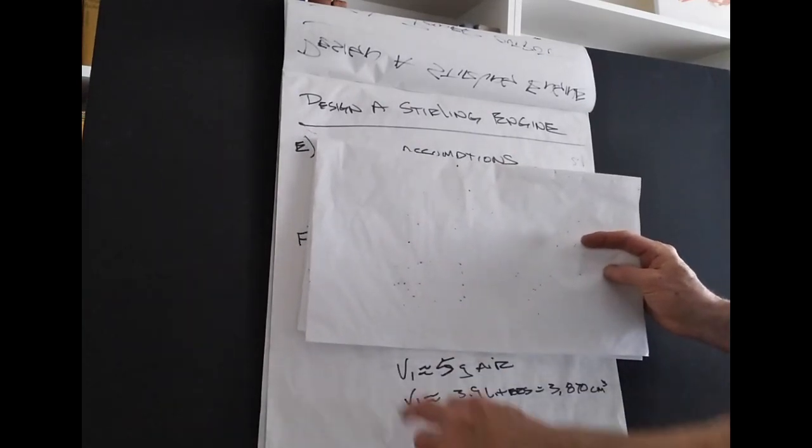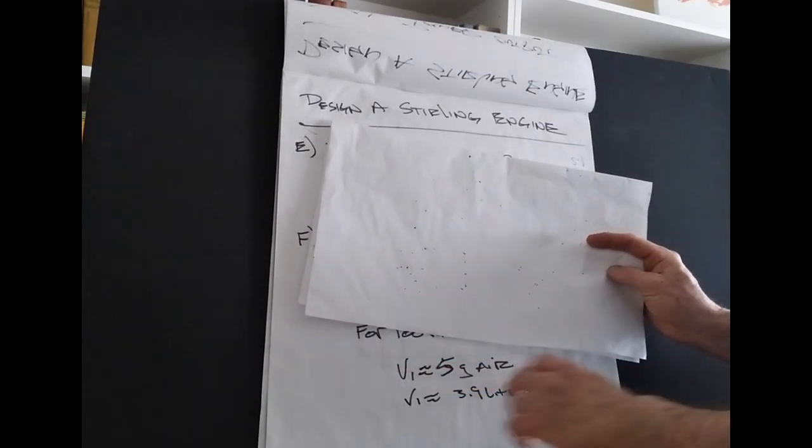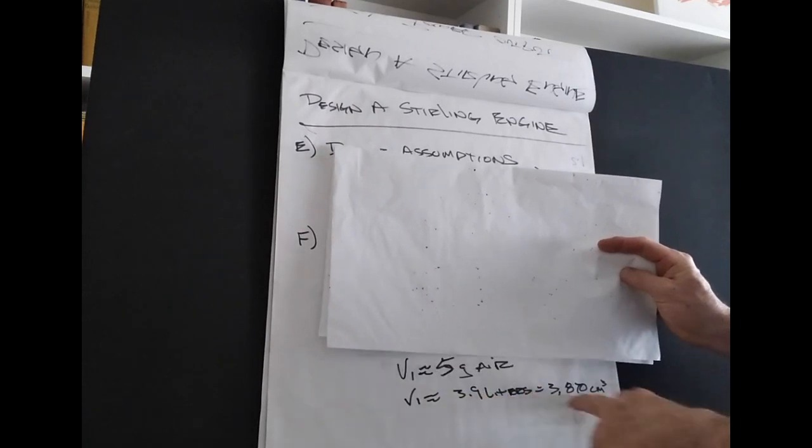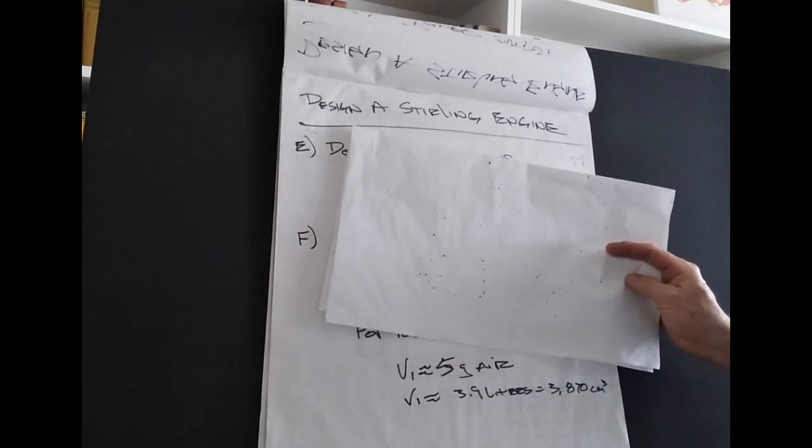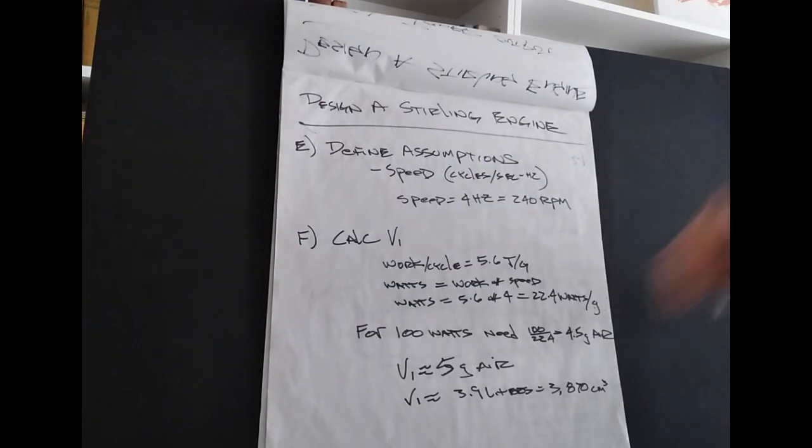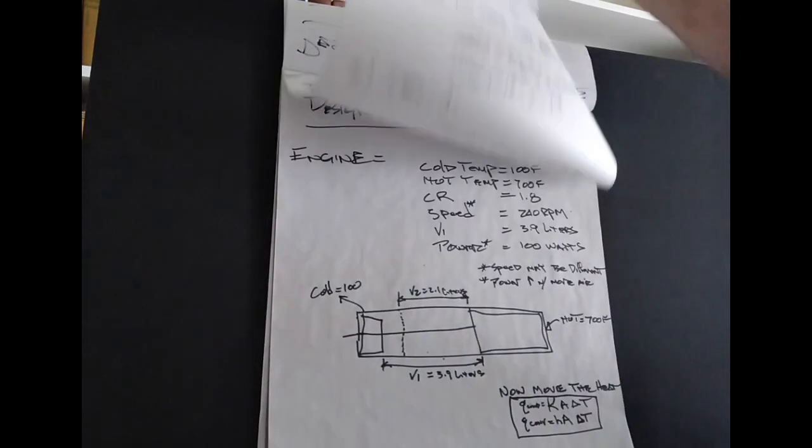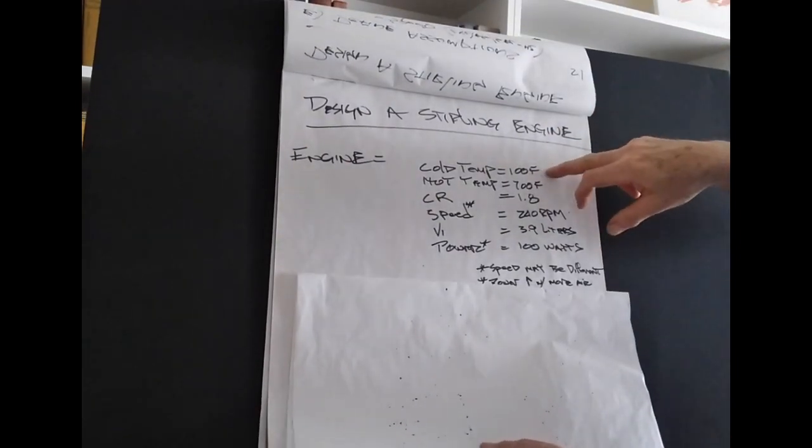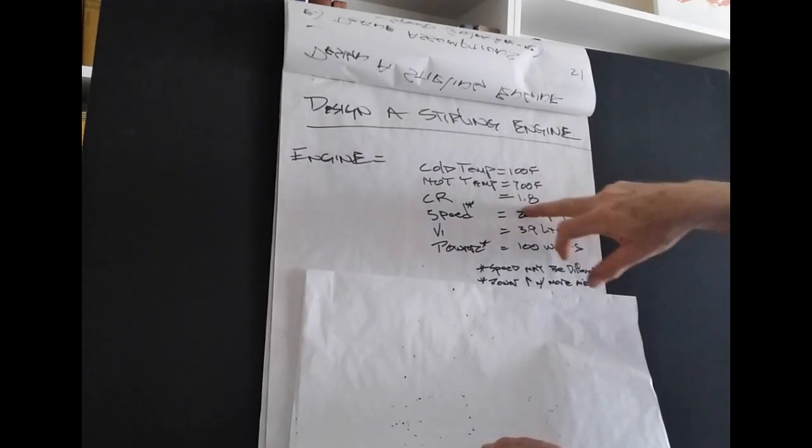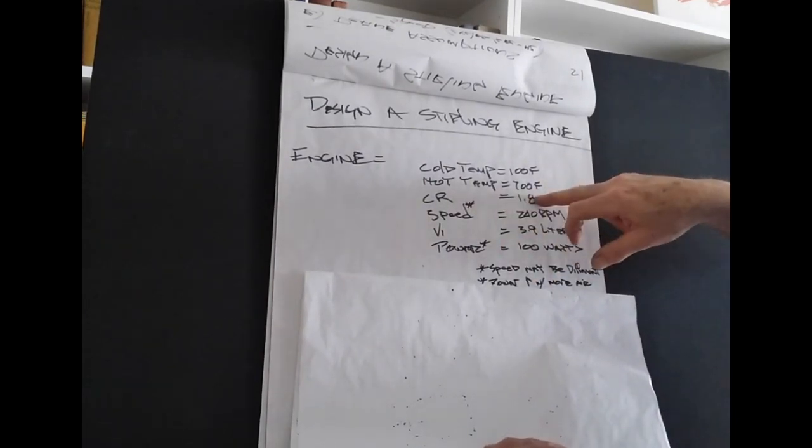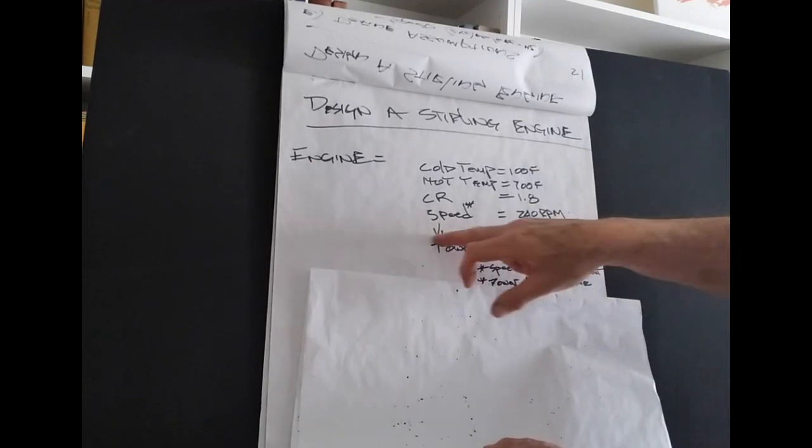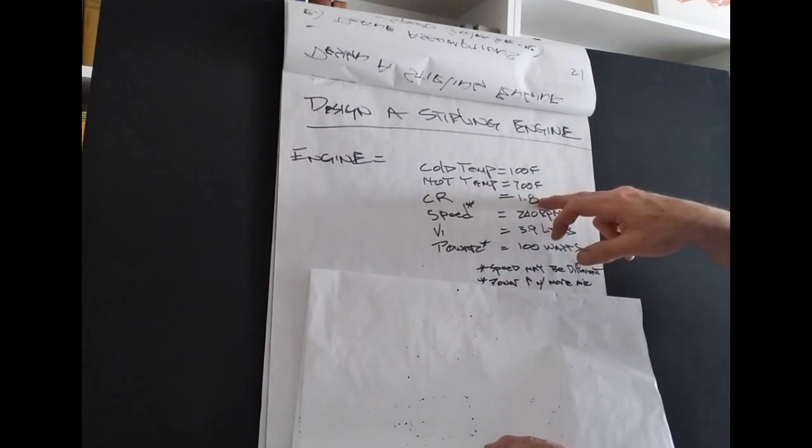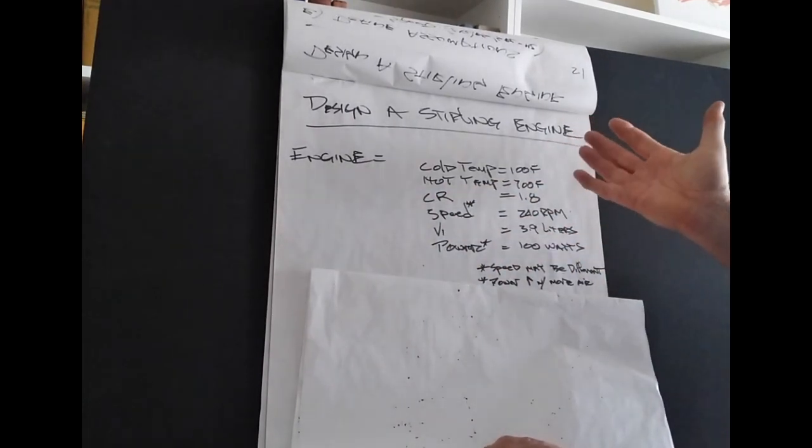All right. So if V1 is going to be 5 grams, let's just say 5 grams of air, then V1 is going to be equal to, at atmospheric pressure, 3.9 liters, or 3,870 cubic centimeters. And that about does it. So now we have our engine. We have our cold temp at 100 degrees F. We have our hot temp at 700 degrees F. We have our compression ratio at 1.8. We have our speed at 240 RPMs. We have our V1 at 3.9 liters. Now we know V1 is 3.9 liters, and we know our compression ratio at 1.8, so we also know V2, which gives us the stroke of the piston.